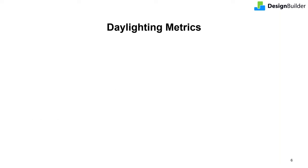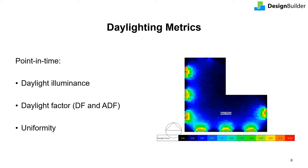Let's look at the various metrics for calculations. For point-in-time illuminance daylighting, three key metrics are calculated: illuminance — the absolute lighting levels achieved; daylight factor — the percentage of outdoor light received inside; and uniformity — typically the ratio of minimum illuminance to average illuminance. With DesignBuilder's summary grids, area-weighted averages of daylight factors can also be calculated.